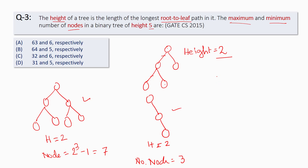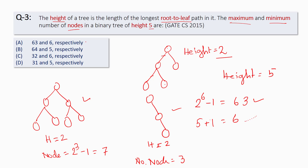Here the height is 5. For a complete binary tree the number of nodes is 2^6 - 1, which is 63. For a skewed tree the number of nodes is 5 + 1, which is 6. Therefore the correct answer is option A.